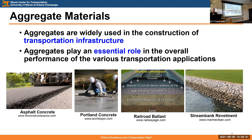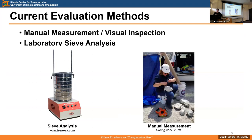Aggregate materials are widely used in the construction of transportation infrastructures and play an essential role in the overall performance of various transportation applications. They can be used in asphalt concrete, Portland concrete, they can form the substructure for railroads, and they can be used in hydraulic applications like streambank revetments.